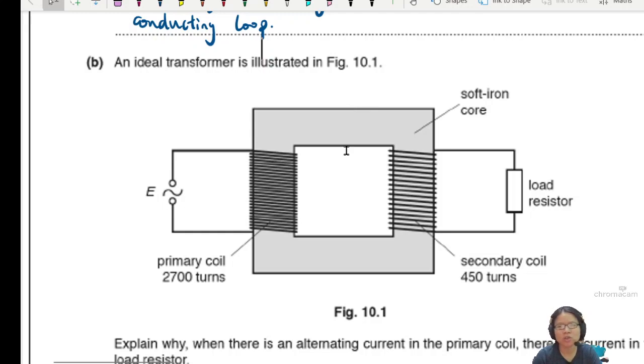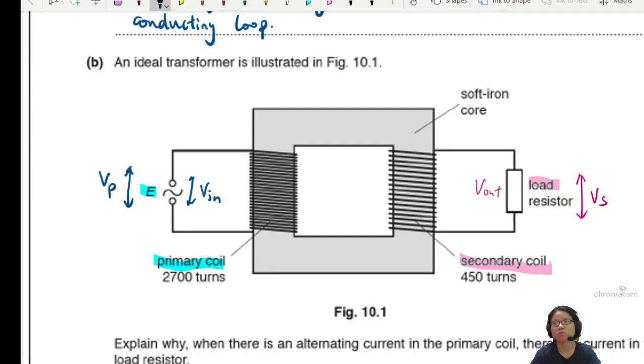So this is an ideal transformer. Beautiful. You have your primary coil, primary coil is always attached to the input. Secondary coil is always connected to the load. So you have input, you have output. So just to label it for you, this is VIN, and this is VOUT. You could also call this VS for the secondary, the voltage across the secondary coil or across the resistor. Just like this one can also be known as VP for primary.